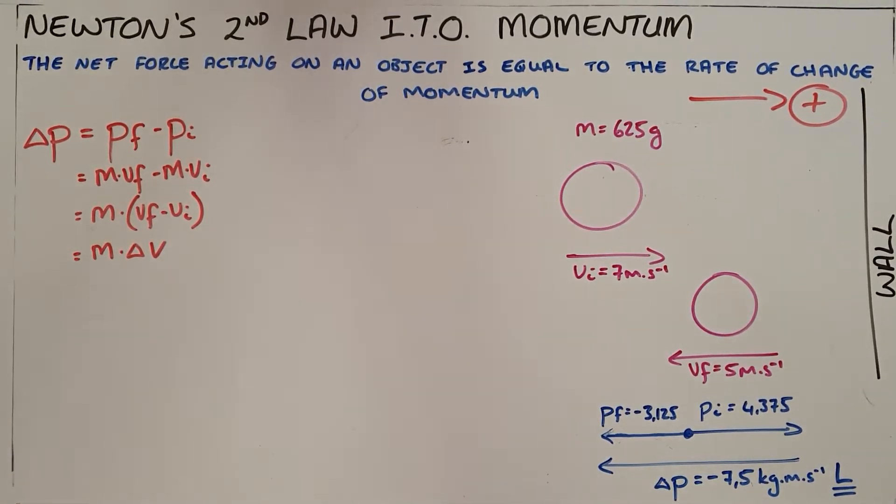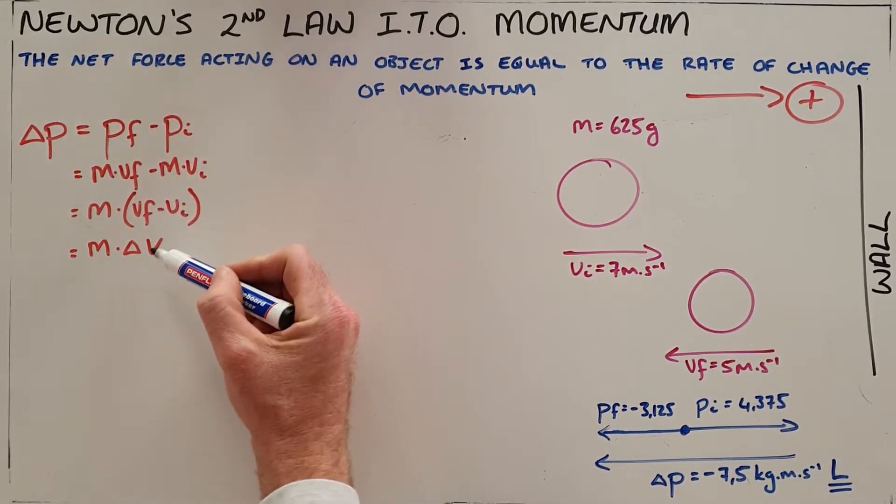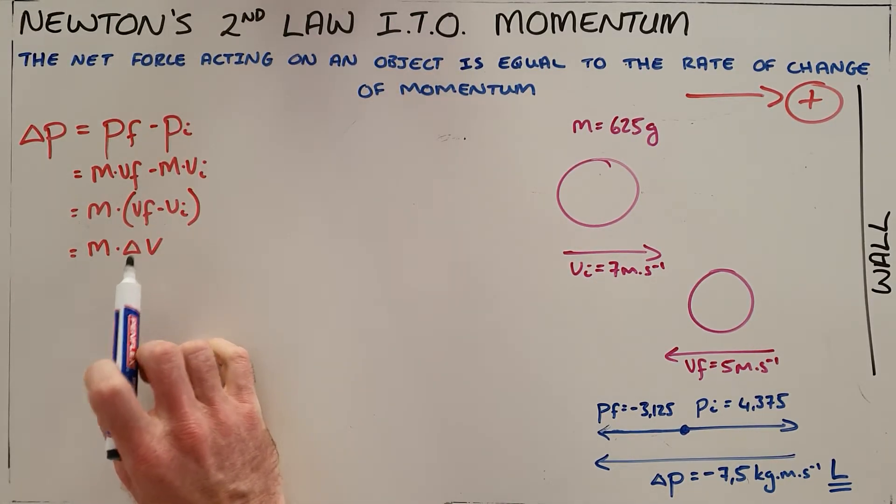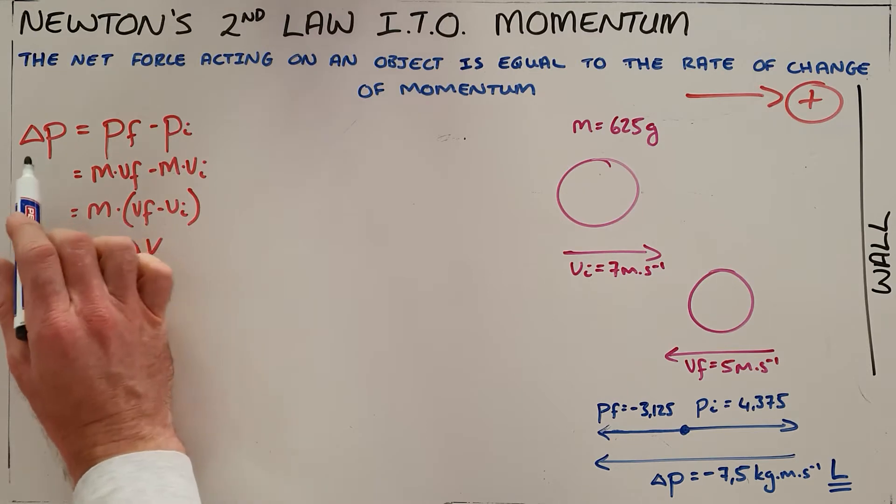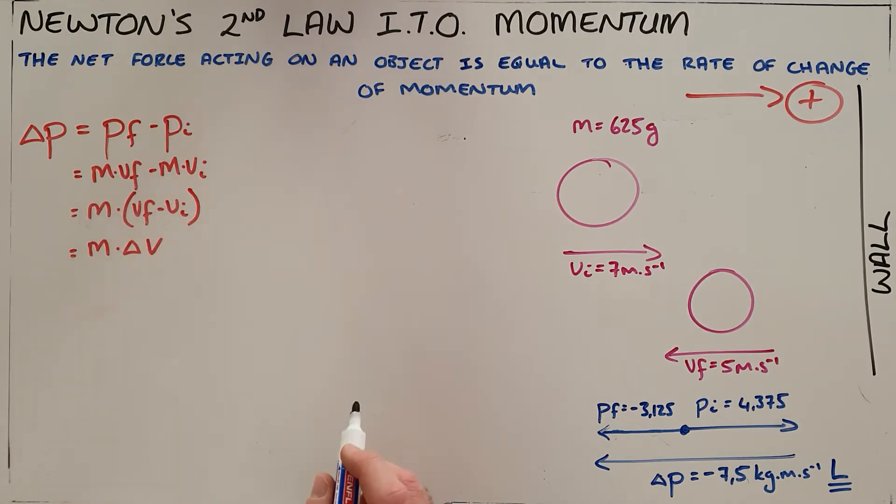We know that the change in momentum for an object is most commonly as a result of that object's change in velocity. Assuming that the mass remains constant, we can say the change in momentum is equal to the mass multiplied by the change in velocity.